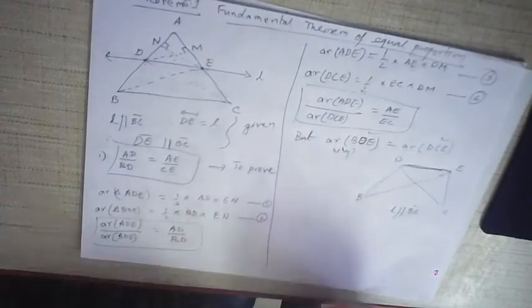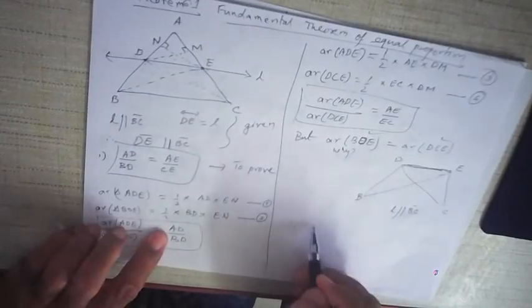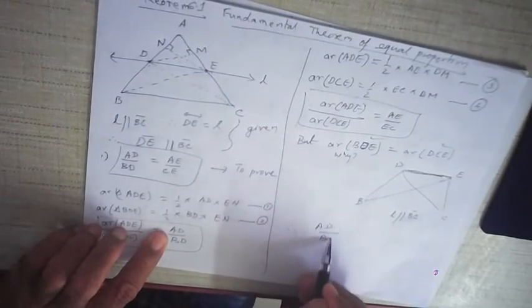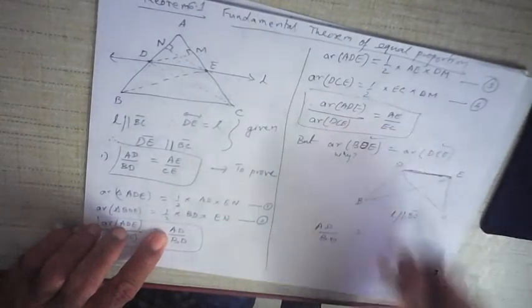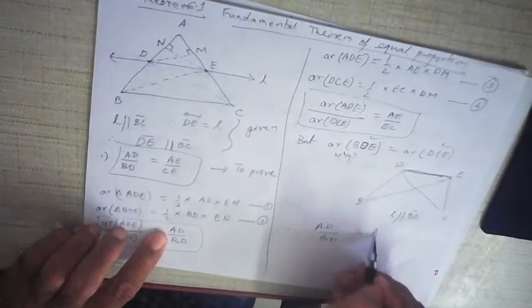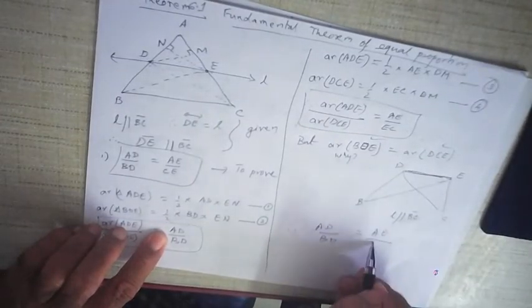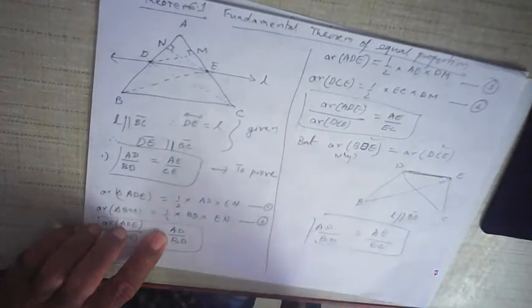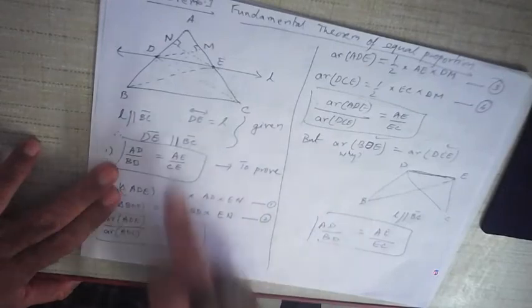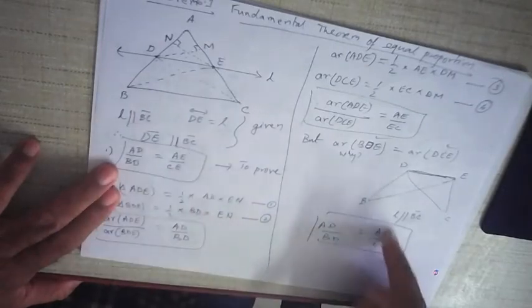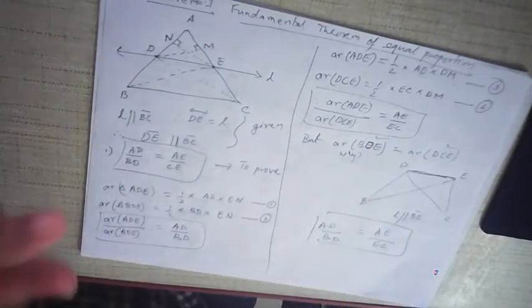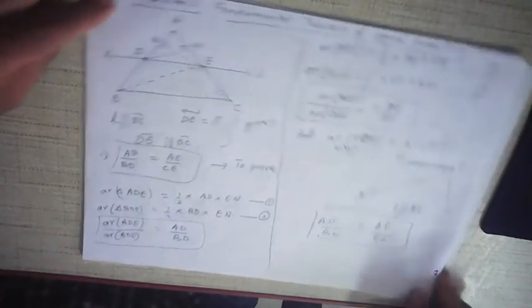Since both areas are equal, therefore AD/BD = AE/EC. This is the required proof — the Fundamental Theorem of Equal Proportions.